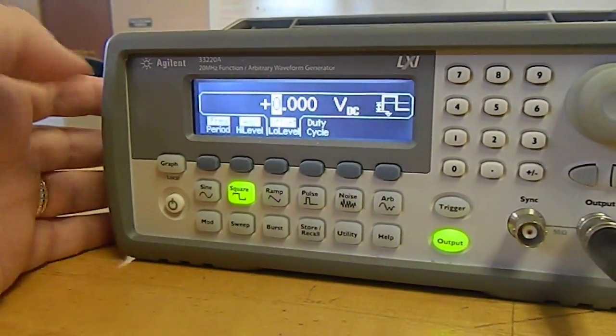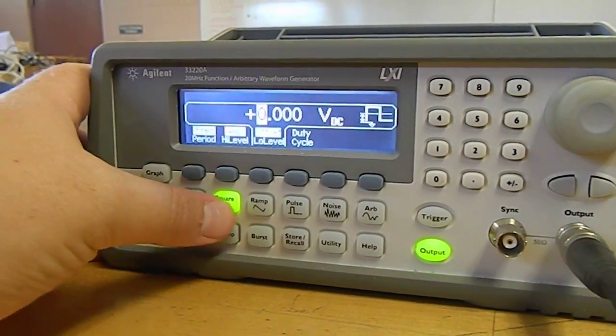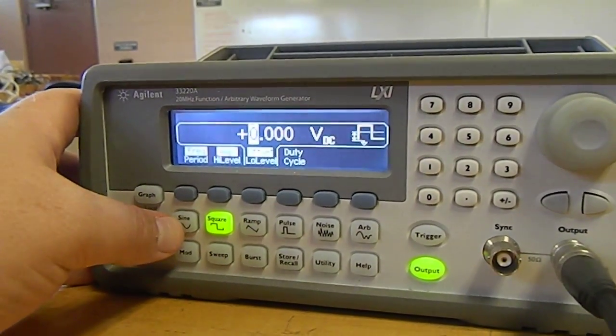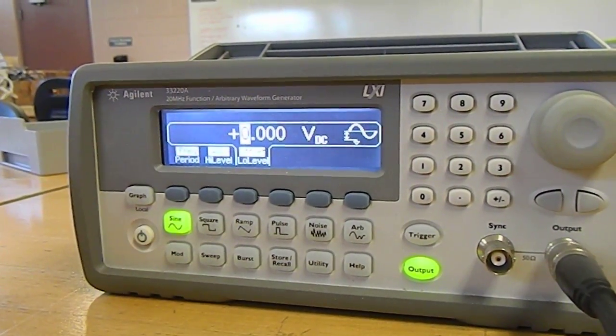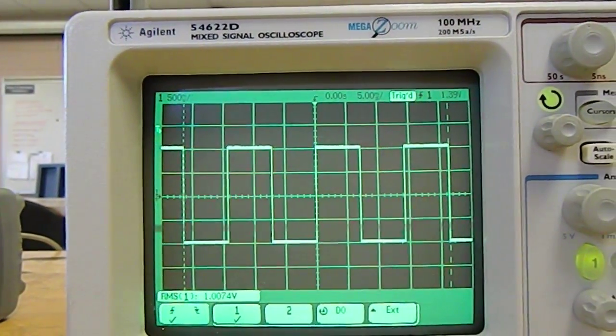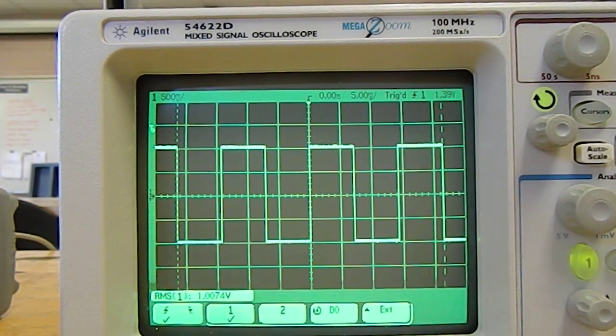function generator over here and I can change this to, for example, a ramp or even better a sine input. And I've clicked sine and nothing has happened on the oscilloscope. So even though it's a sinusoid being put into